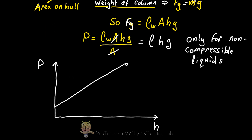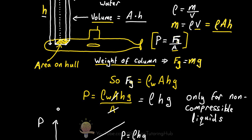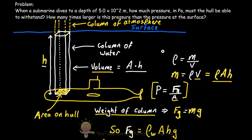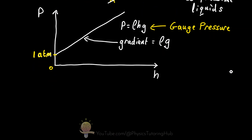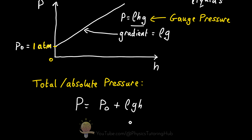This won't work with gases because gases can be compressed, but liquids like seawater are very hard to compress. The formula so far only accounts for the weight of the water column — this is called gauge pressure. We must also add the weight of the atmosphere above sea level. The total or absolute pressure on the submarine equals gauge pressure plus atmospheric pressure at sea level. This gives us the final equation for total pressure.